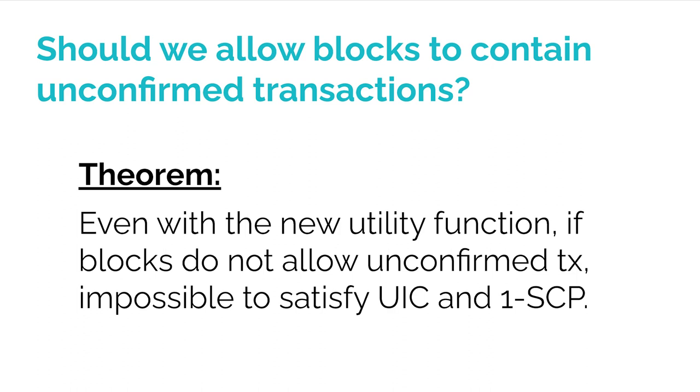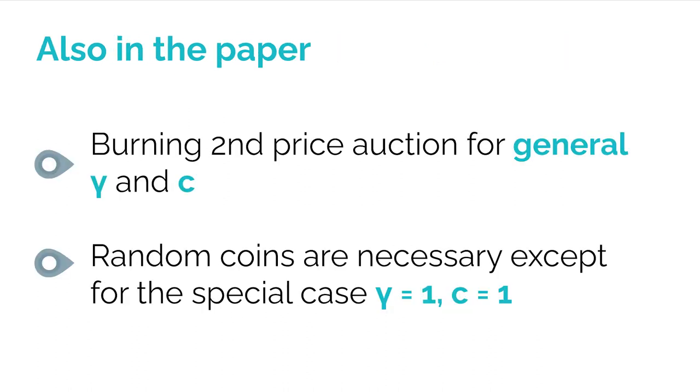In the paper, we generalize to general choices of gamma and C. For the general mechanism, we randomly sample gamma times K over C users from the top K to confirm. Except for the special case of gamma equals one and C equals one, the mechanism becomes randomized. A natural question is whether this randomization is necessary — and it turns out that indeed it is, unless you consider degenerate mechanisms where only one user is ever confirmed.